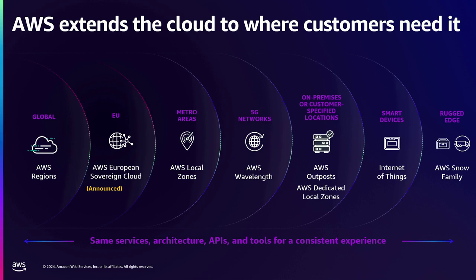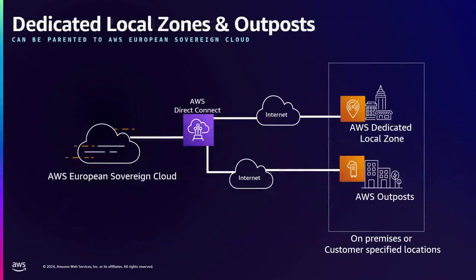It doesn't have to be one or the other — it could be a combination. Dedicated Local Zones are for customers who have sensitive data and applications that need to run on physically separate infrastructure housed within a facility of their choice. With European Sovereign Cloud, there is the ability to parent local zones, dedicated local zones, and outposts to the European Sovereign Cloud in order to offer more in-country residency — so the continuum can be used in combination.